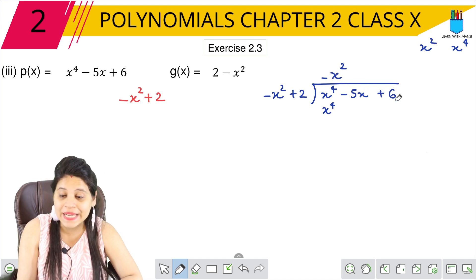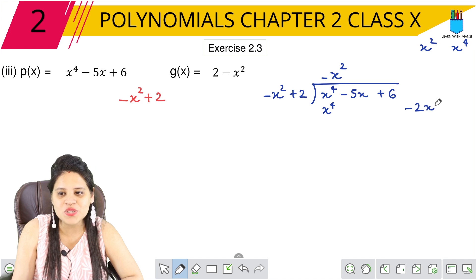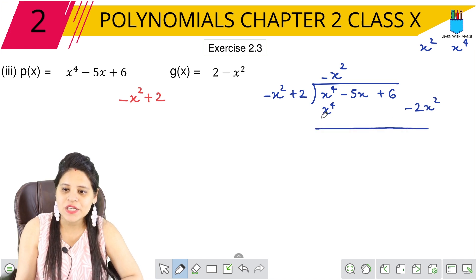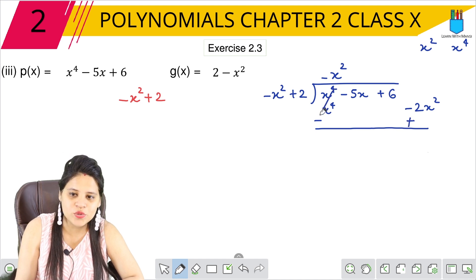But here it is not x square, so we will take it. Minus 2x square. Got it? Now let's solve it. So this is minus, this is minus, this is plus. This will be cut.